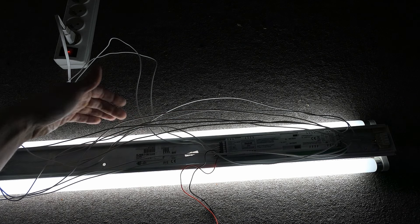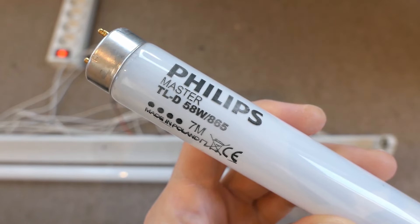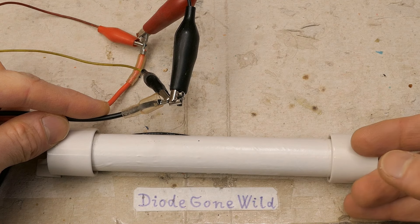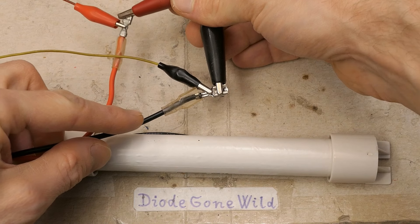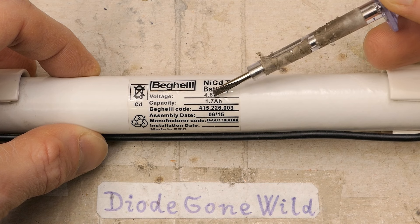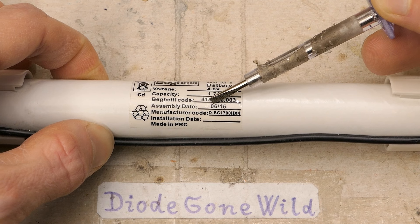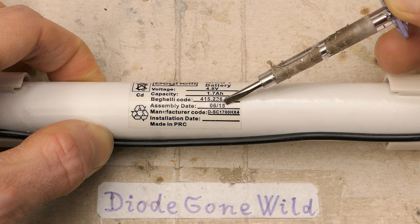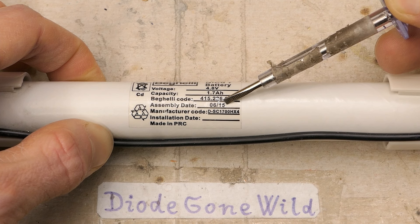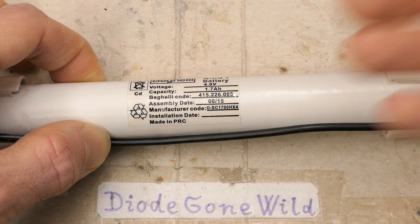It backs up just one tube, not at full power. These 58-watt tubes are 150 centimeters long. Here's the battery pack I'm trying to charge. The marking shows nickel-cadmium 4.8 volts, 1.7 amp-hours with a date code of June 2015. The fixture was removed and replaced in 2023, so it was in use for 8 years.